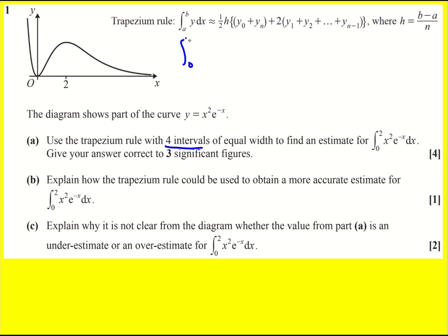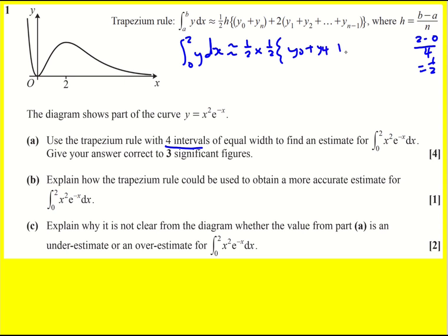For us we're going from zero to two. n is four, so it's going to be two minus zero over four — they're going to be a half each. It's going to be a half times a half, and then y-zero plus y-four, replacing n by four, plus two lots of y-one plus y-two plus y-three.